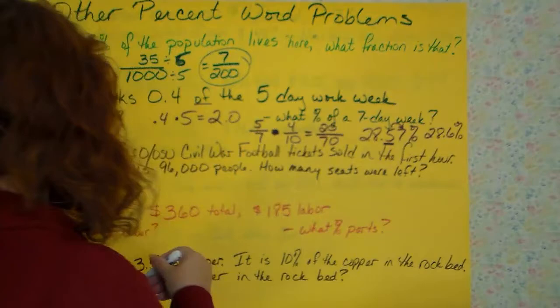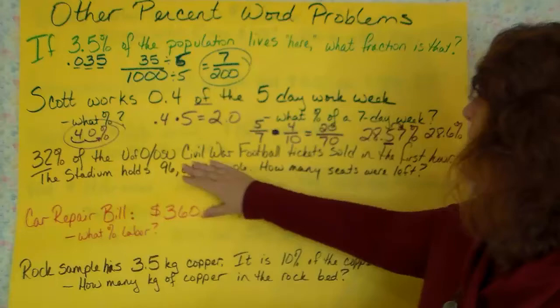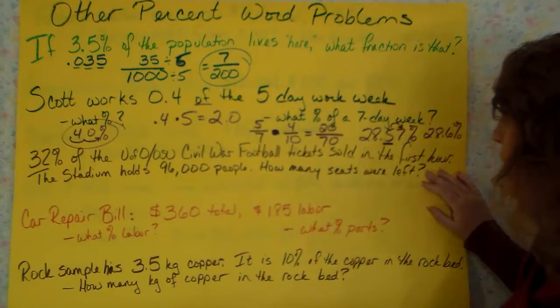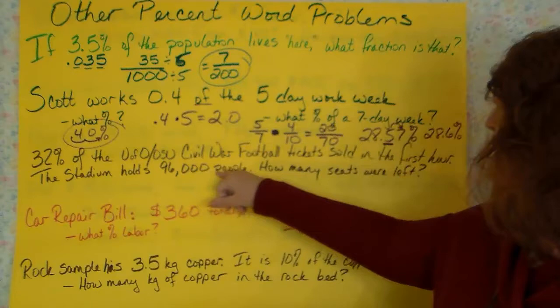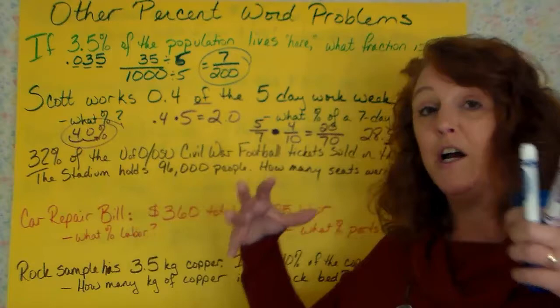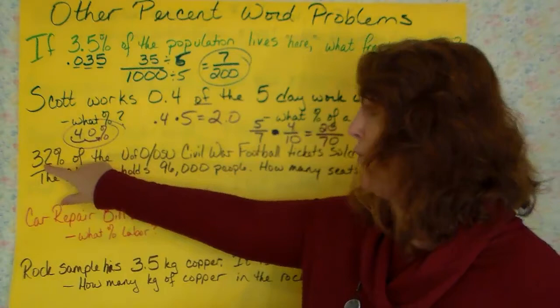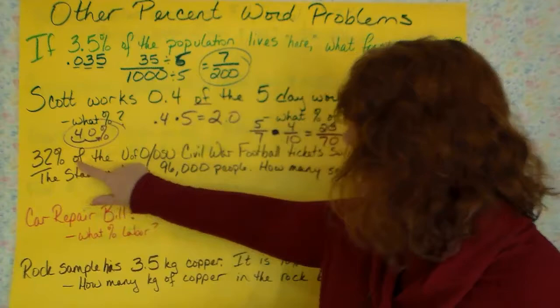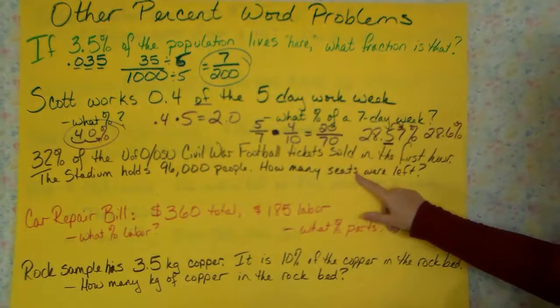Next type of question they're going to ask you. 32% of the U of O OSU Civil War football tickets were sold in the first hour. That stadium holds 96,000 people. There are this many seats in the stadium. Now, I need you to understand the big picture. 96,000, they sold 32% of them. We have to figure out what 32% of 96,000 is to see how many they sold.